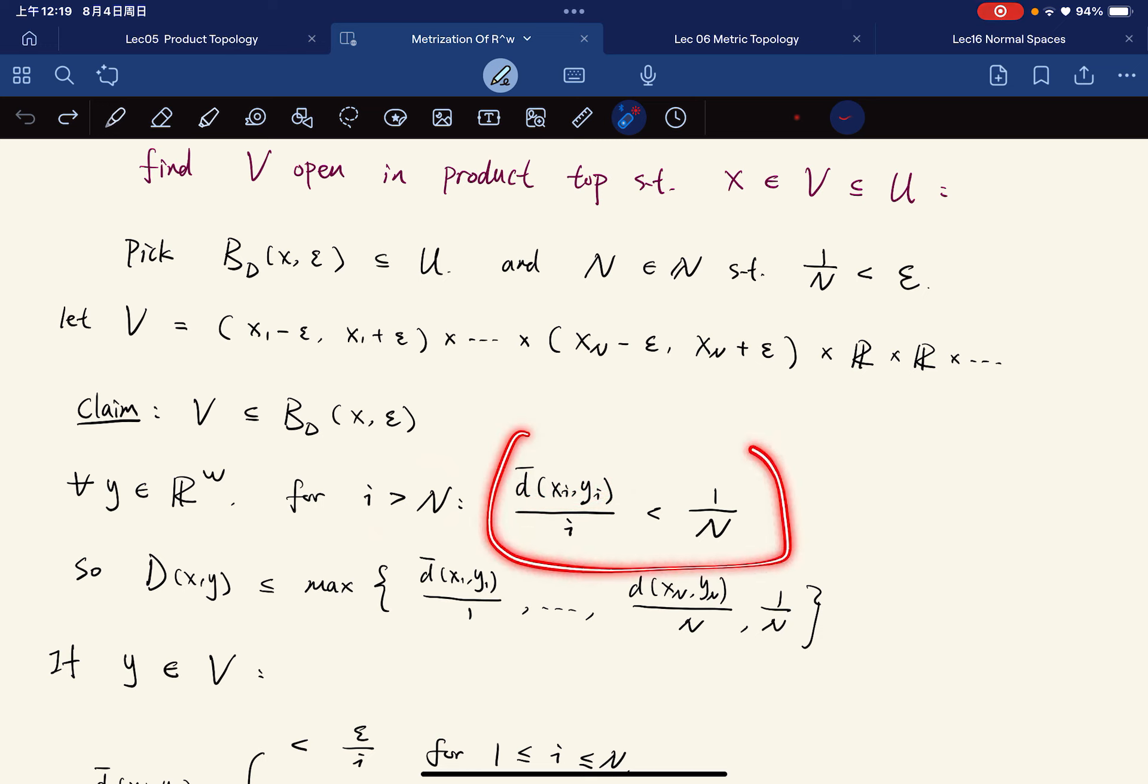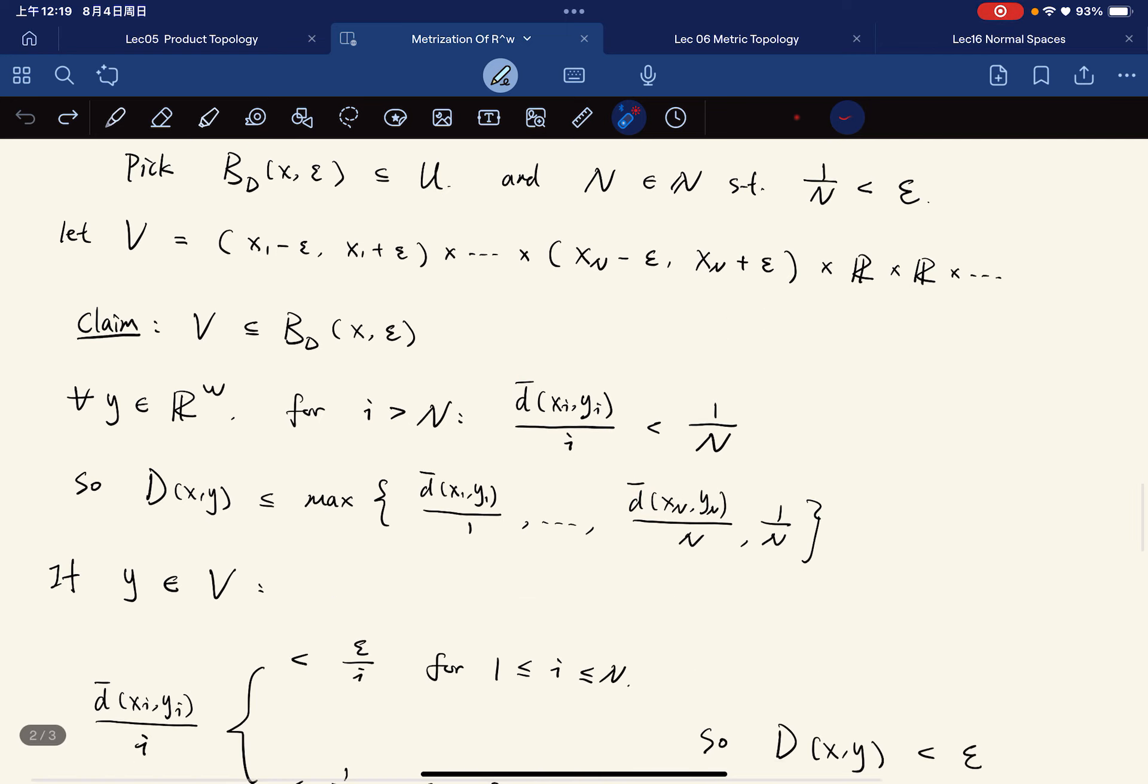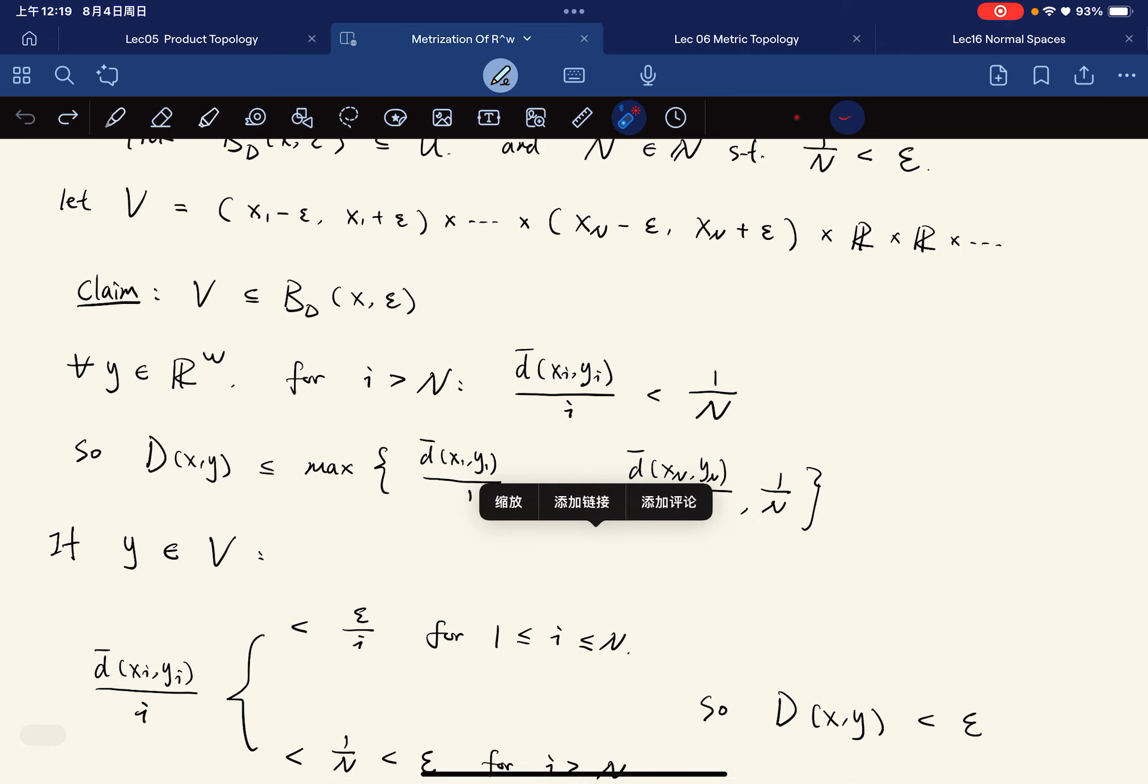So we have this inequality. So the distance between x and y must be smaller than or equal to the maximum of them, right? Because it's a supremum.